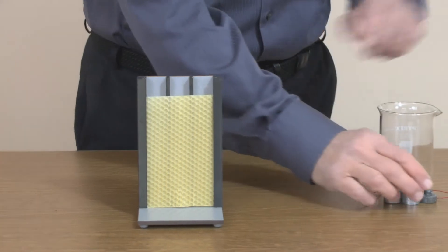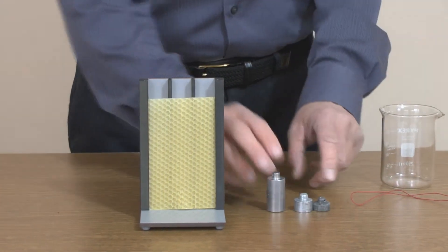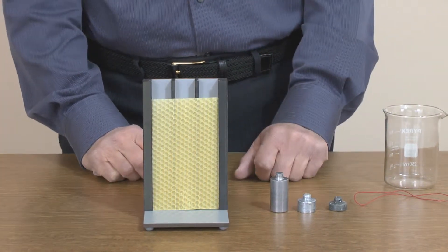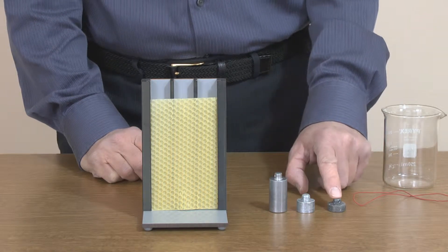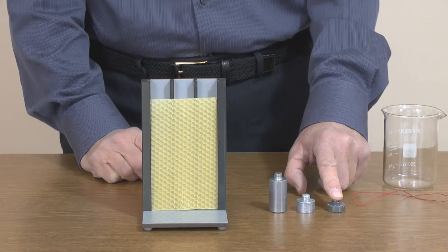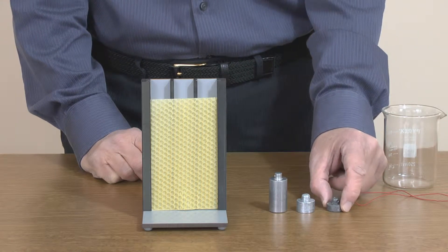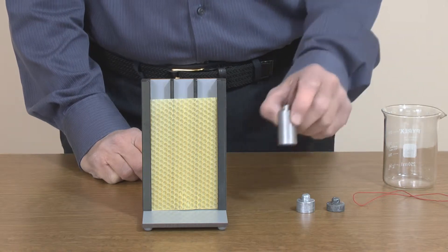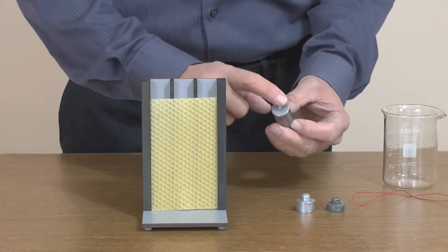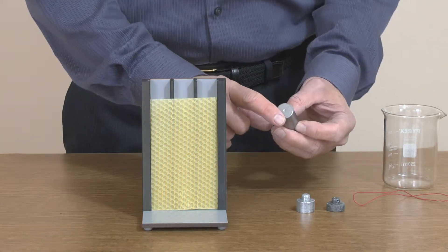We have three different metals: aluminum, zinc, and bismuth. In older versions of this apparatus this one used to be lead.